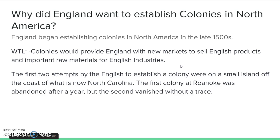Not only could they make more products with the raw materials they were getting, but they were going to sell those products back to the colonists. England had two attempts to set up colonies off the coast of what is now North Carolina, on an island called Roanoke Island. The first attempt ended with them abandoning the colony. The second attempt is a mystery — there was a war between Spain and Britain, and for two years they could not afford to send ships. When they finally did, there was no one left. They vanished completely without a trace, and we still have no idea where those colonists went.